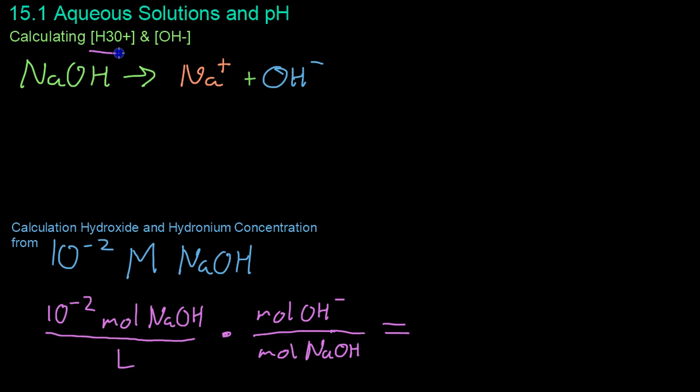Now we're going to be going over how to calculate the concentration of hydronium and hydroxide in solution. Strong acids and bases, which are mainly what we're going to be doing these examples with, completely dissociate in water. As an example, to calculate the hydroxide and hydronium content, let's take 1 times 10 to the minus 2 molar solution of NaOH.